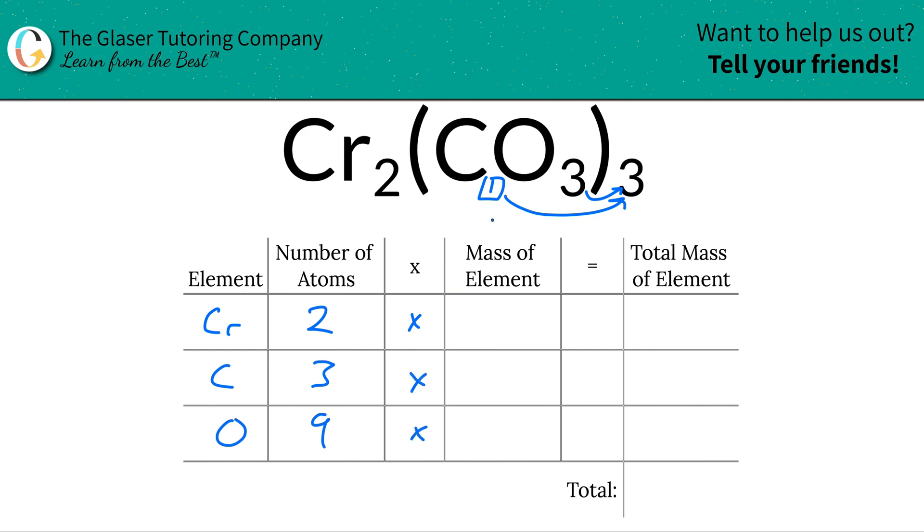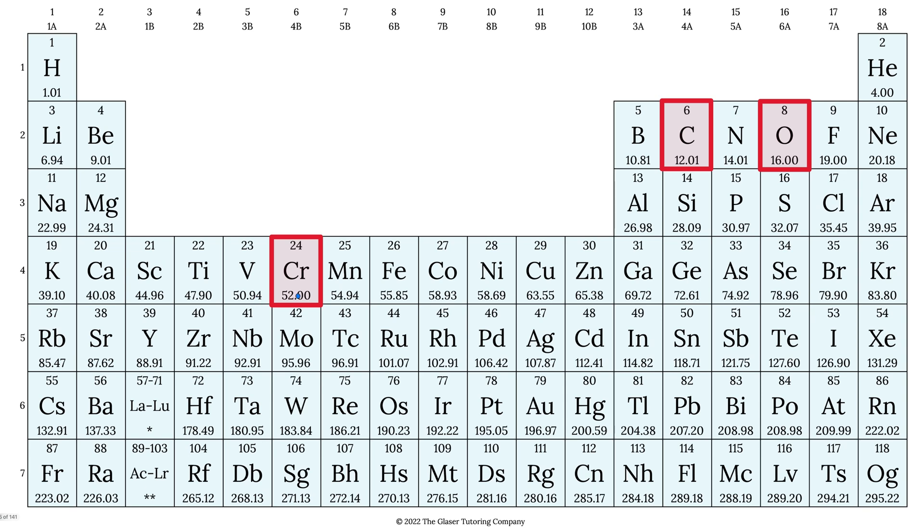Next I'm going to find the mass of the element. Where do we find it? Periodic table. Let's take a look: chromium is 52, carbon is 12.01, oxygen is 16. Those represent the masses - the magnitudes. The units can be grams per mole or amu depending on if you're finding molar mass or molecular mass.